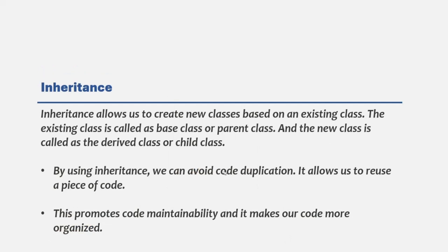Inheritance allows us to create new classes based on an existing class. The existing class is called the base class or parent class — in our case, the Person class. The new classes we derive from the base class are called derived classes or child classes. In our example, the Employee class and the Athlete class are the child classes. By using inheritance, we can avoid code duplication, reuse a piece of code, and this also promotes code maintainability and makes our code more organized.